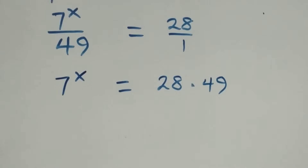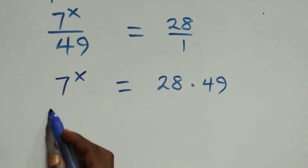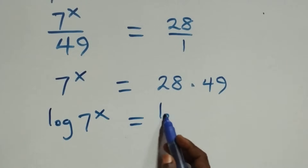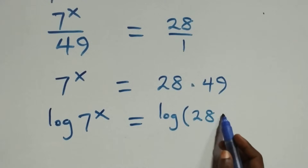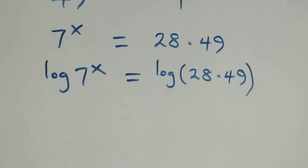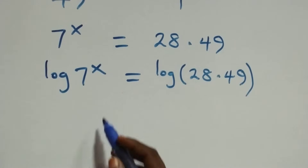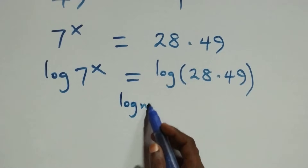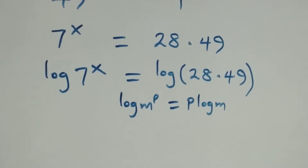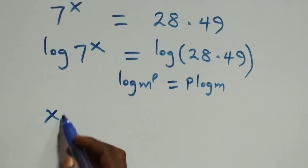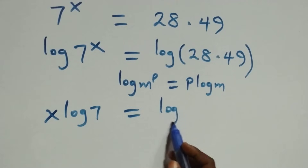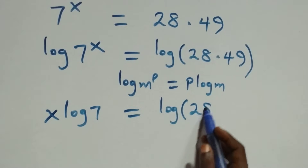Next we take the log on both sides: log of 7 raised to power x equals log of 28 times 49. We apply the power rule of logarithms — when we have log m raised to power p, this is the same thing as p log m. So what we have becomes x log 7 equals log of 28 times 49.